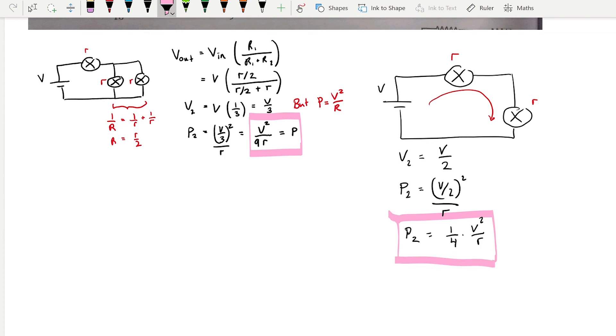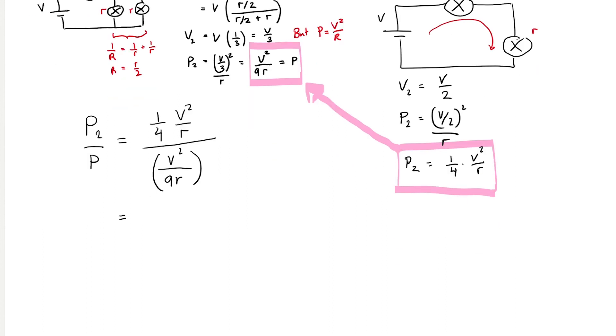I need to now express p2 in terms of p, which is what we found earlier. So now I need to divide p2 by p, just so that I have a ratio. So that becomes 1 over 4 v squared over r, all of this divided by v squared over 9 r. That is the same as saying v squared over 4r times by 9r over v squared. This cancels out. This cancels out. So that is going to be equal to 9 over 4. So you can say that the ratio of p2 to p is equal to 9 over 4.